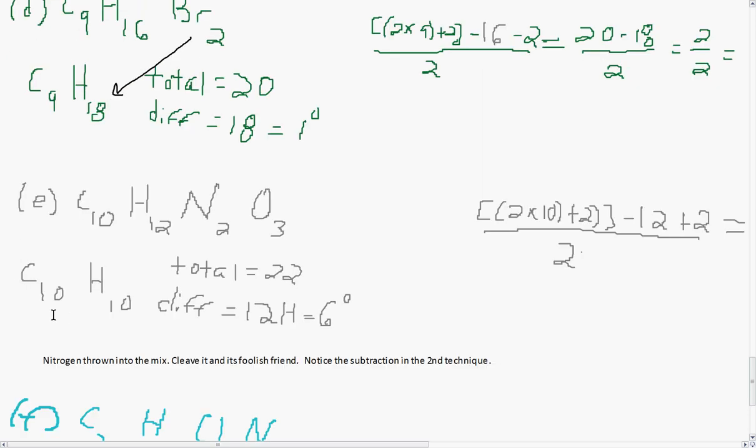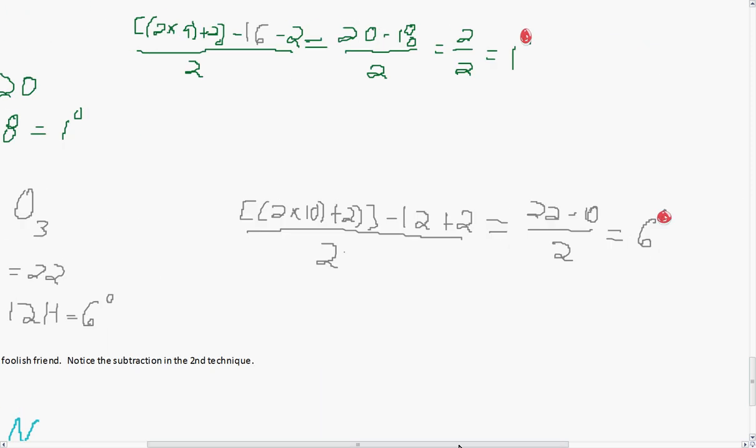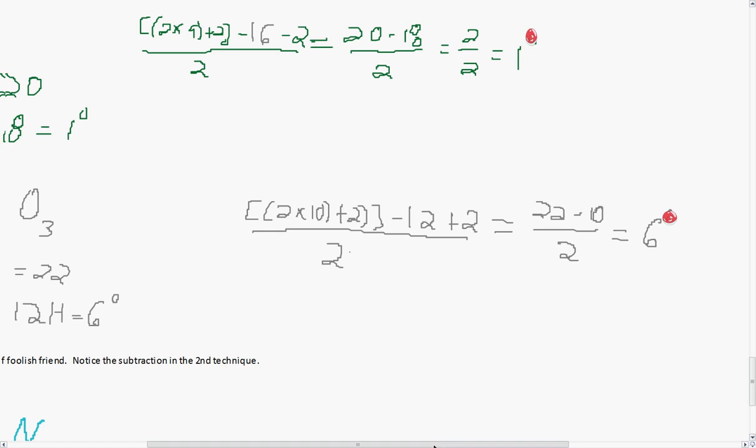In E here, we have nitrogen thrown into the mix. Cleave it, and its foolish friend. Notice the subtraction in the second technique, because here we're dealing with a bit more. And again, this nitrogen is going to cleave off 2 hydrogens when it leaves. And you have your difference of 12 hydrogens, so that gives you 6 degrees. And here's the formula. You plug in your N, chug it out. I personally prefer the formula. Sometimes in the higher levels, it gets more tricky. And it's just easier to use the formula, in my opinion.